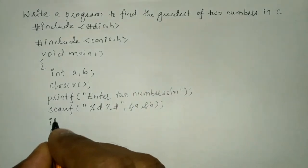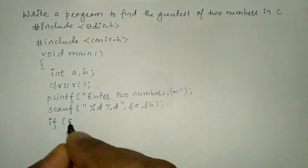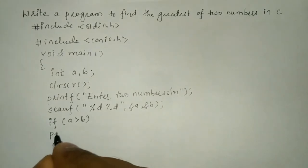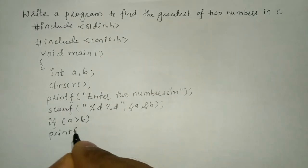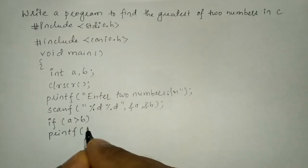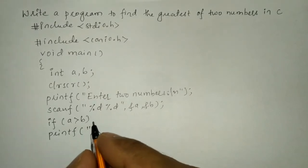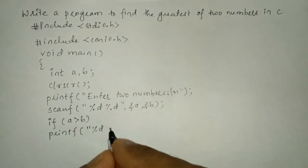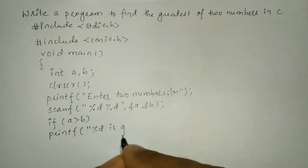Now we will check the condition if a is greater than b we have to print that a is greatest. So for that I will write in printf statement double quotation mark %d format specifier is greatest.